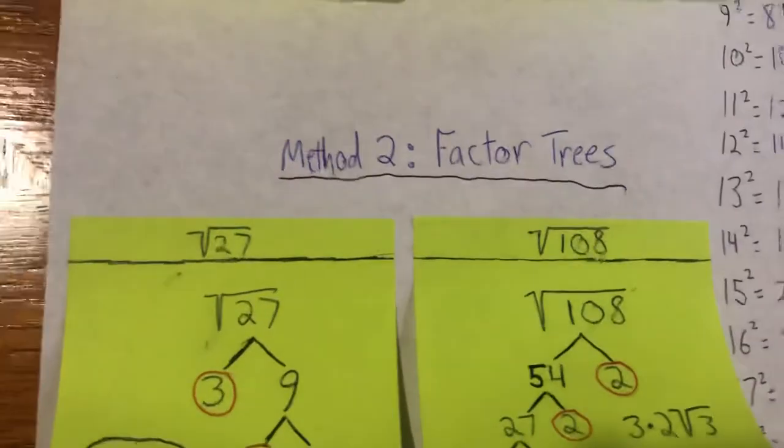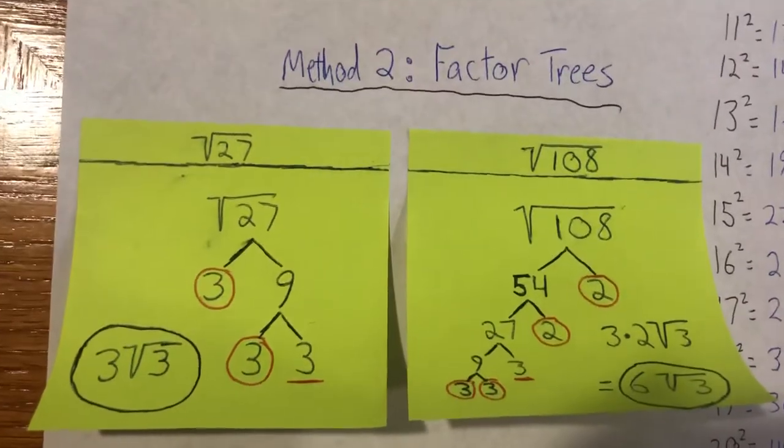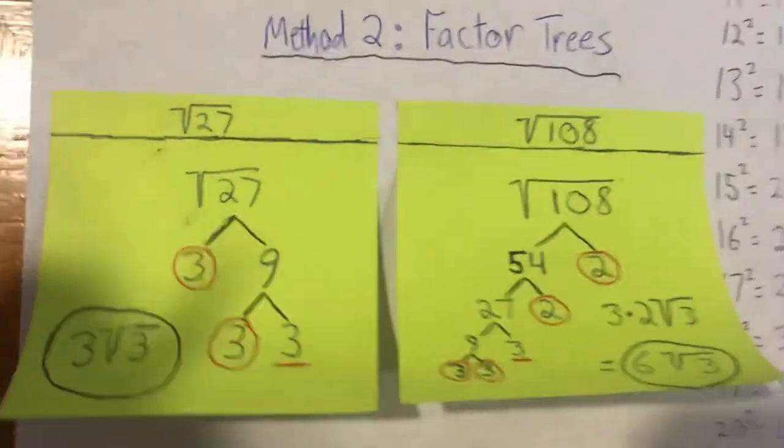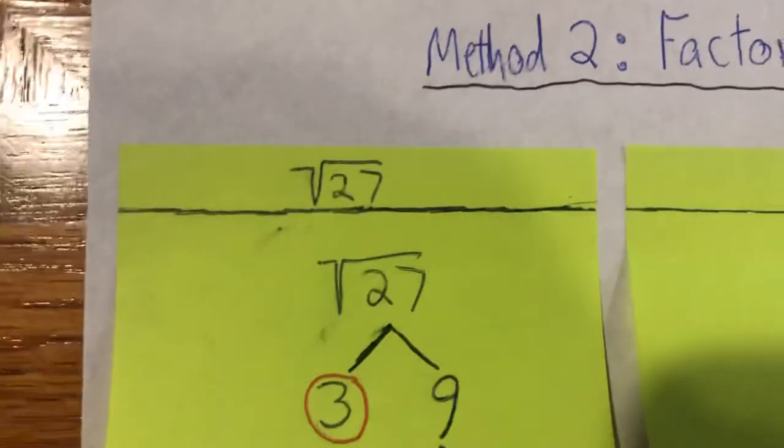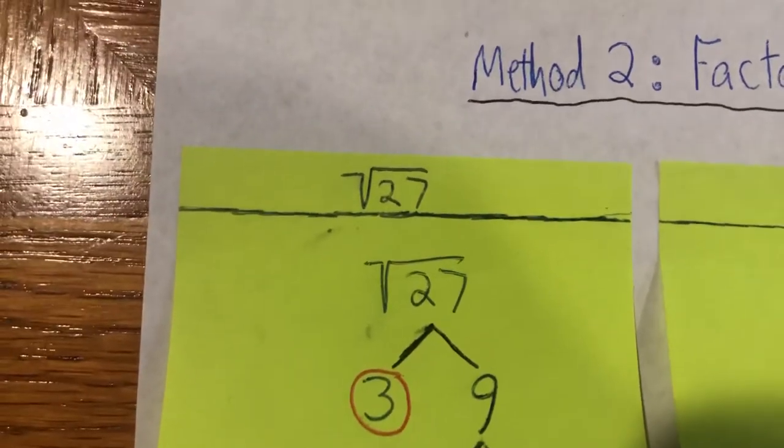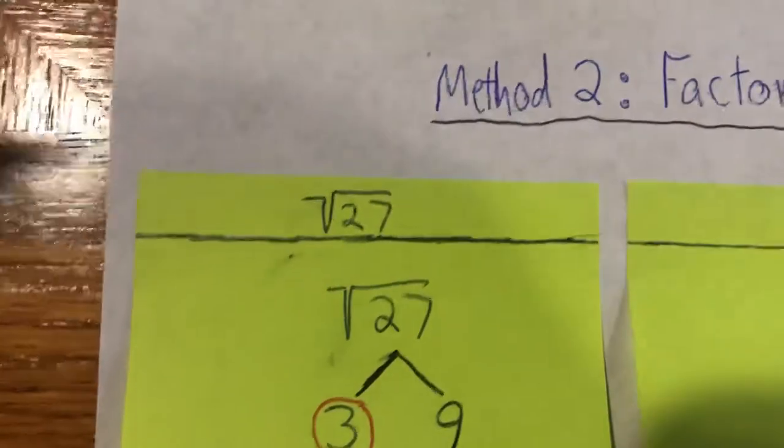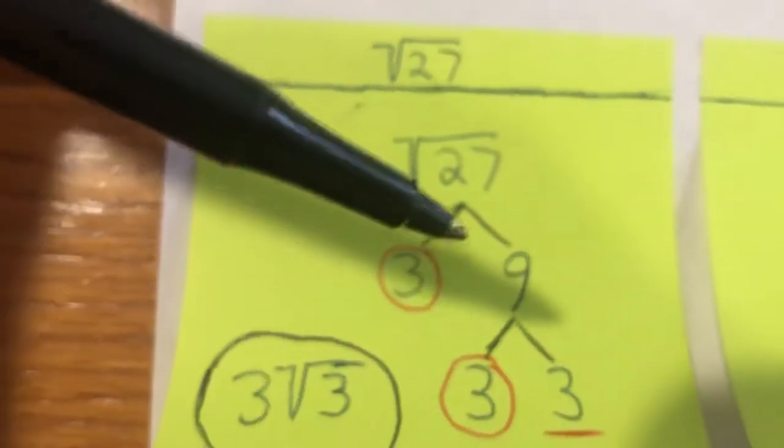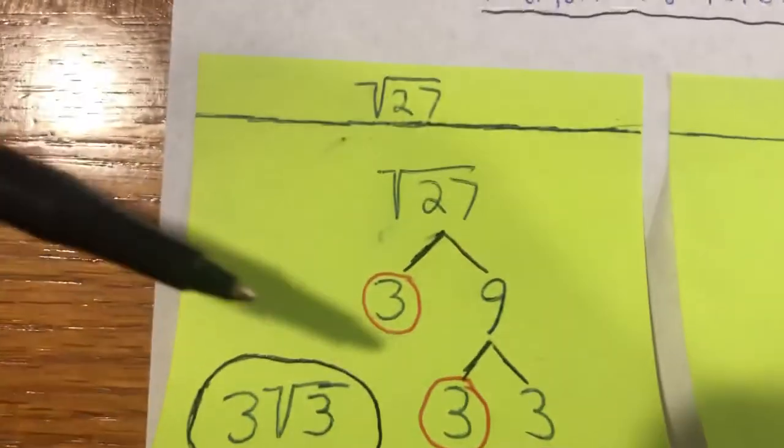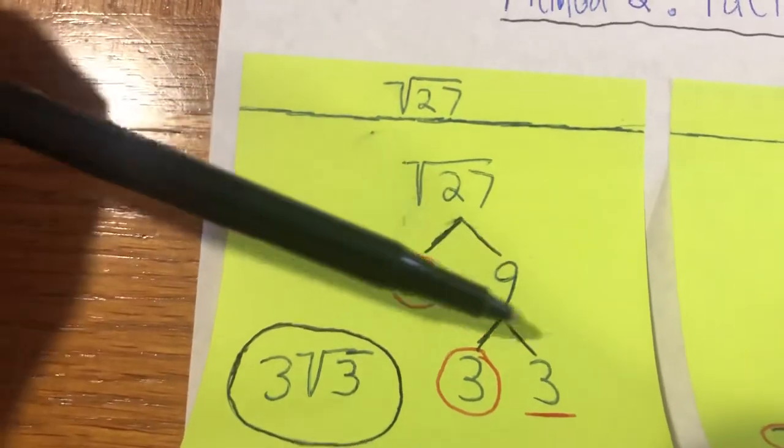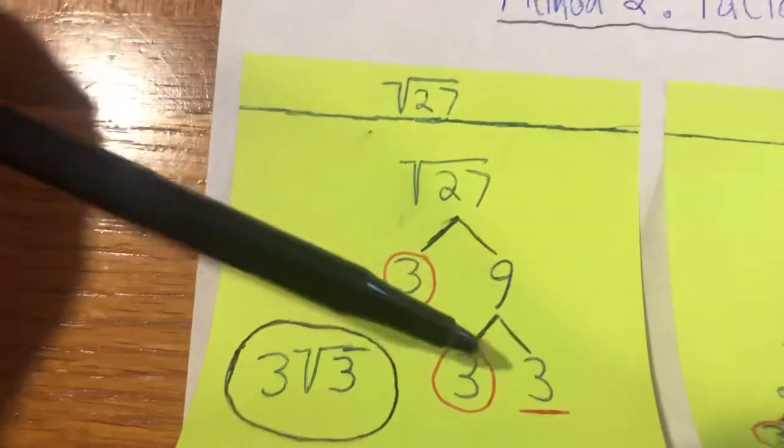All right, so method number 2, factor trees. Some of you guys might prefer method 1. Some of you are going to like factor trees better. So you can use whatever method you like. Looking at the square root of 27, I'm going to break it apart into factors. Just like with factoring out a perfect square, you don't want to bother using 1 at all. It's not going to help you with anything. So with 27, first two factors that came to mind for me were 3 and 9. So 3 is a prime number, so I can stop factoring that right there. But 9 still does have some factors other than 1, so we have 3 times 3.